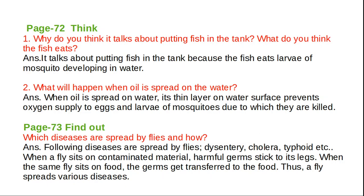Here the question is, what do you think it talks about putting fish in the tank? It talks about putting fish in the tank because the fish eats larvae of mosquitoes developing in water. Why are we putting fish in the tanks? Because the fish eats the larvae of mosquitoes. Automatically, the mosquito population will be reduced. This is one way to reduce the mosquito population.